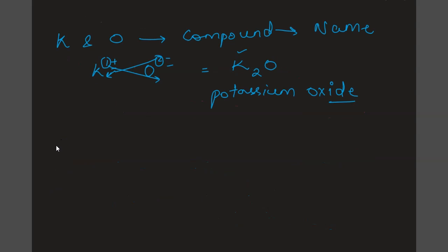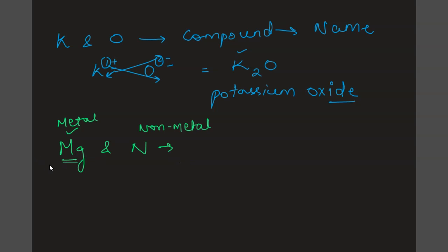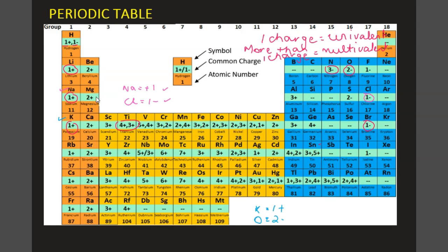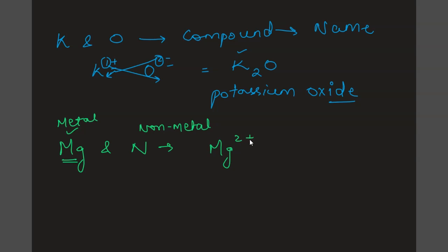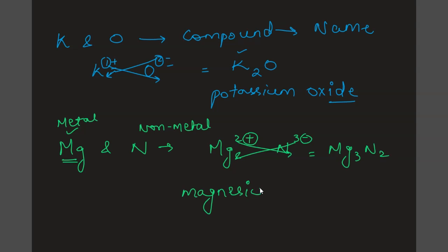Let's take another example of a univalent ionic compound for practice. We have magnesium and nitrogen. Since magnesium is a metal and nitrogen is a non-metal, this is an ionic compound. From the periodic table, magnesium has a two positive charge and nitrogen has a three negative charge. We crisscross the numbers — that gives us Mg3N2. The name is magnesium nitride.